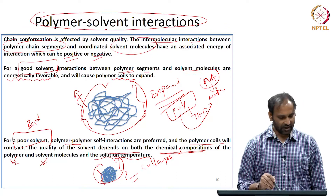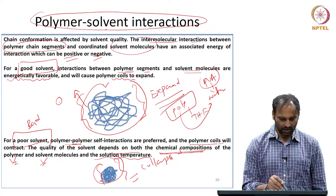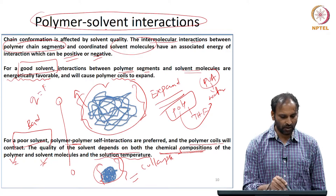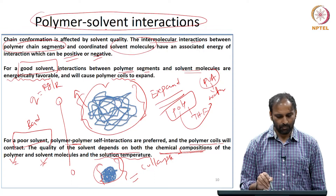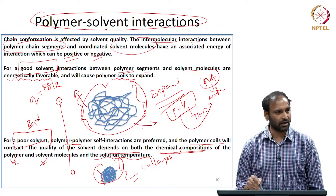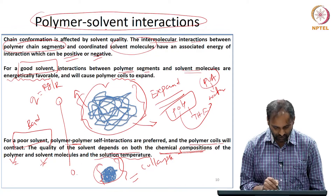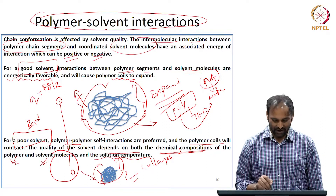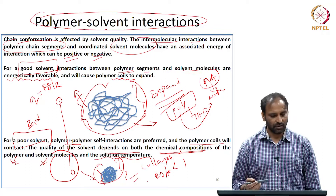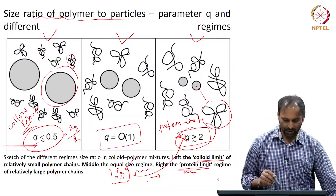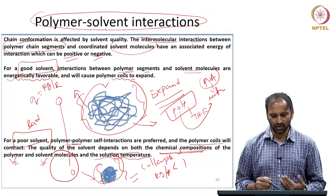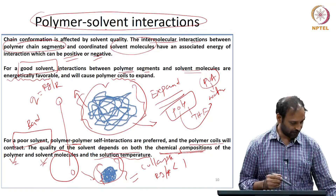Depending on the composition of the polymer, solvent, and solution temperature, polymers can take either an expanded or a collapsed configuration. This matters because q — defined as Rg divided by R (polymer size divided by particle size) — will differ between cases. If the polymer is in an expanded state and the particles are very small, you could be in the protein limit where Rg/R is less than 1. So polymer-solvent interactions are important both for deciding which regime you are in with respect to the particle-size-to-polymer ratio, and for influencing other interactions in the system.